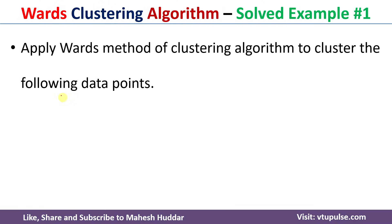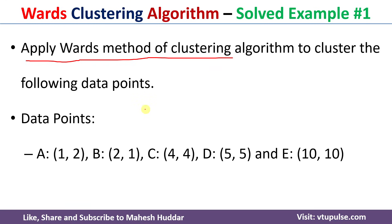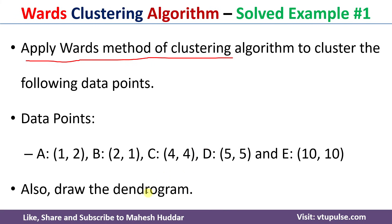For the given problem, we need to apply the WOTS method of clustering algorithm to cluster the following data points. In this case, we have five data points A, B, C, D and E. Once we cluster the data points, next we need to draw the dendrogram to visualize the clustering process.